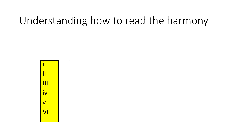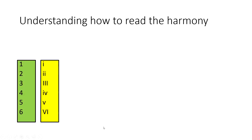You might have noticed we're using strange symbols called Roman numerals. Here's a translated version: when we see I it literally means one, II is two, III is three, IV is four, V is five, and VI is six.